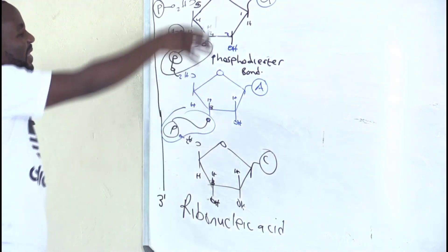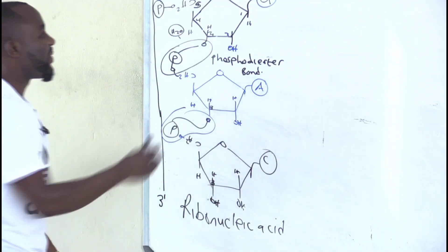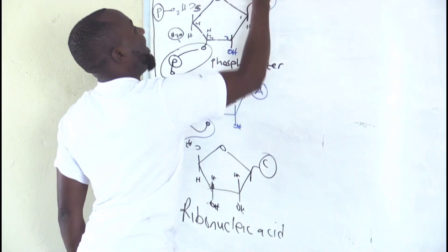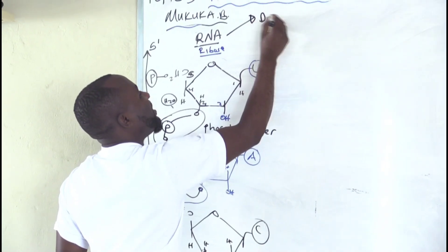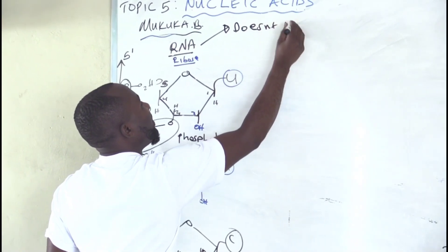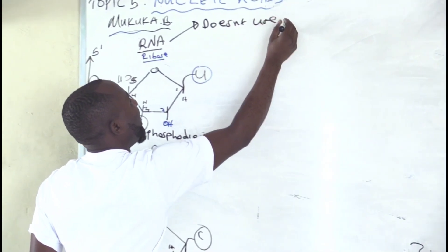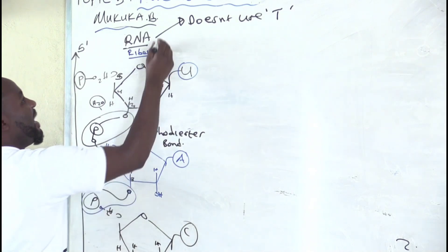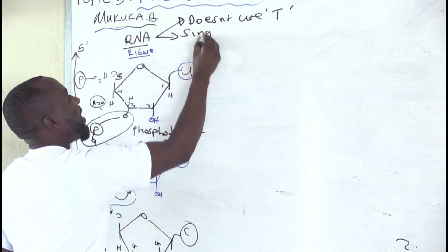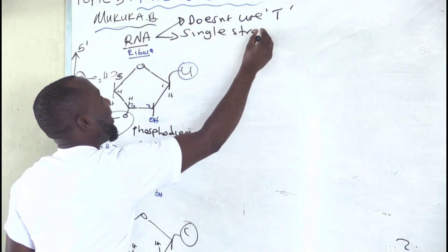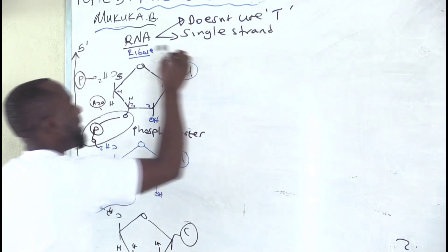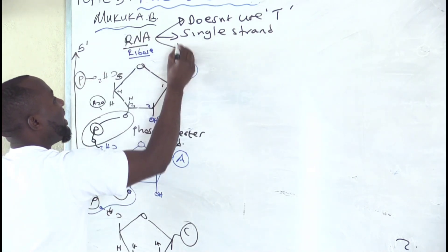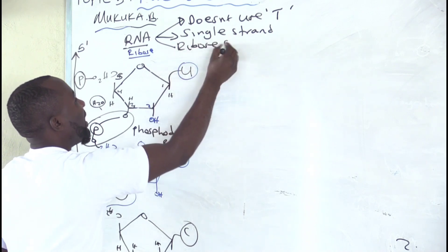For RNA: number one, it doesn't use thymine. Number two, it's a single strand — just a single chain. And number three, it uses a ribose sugar.